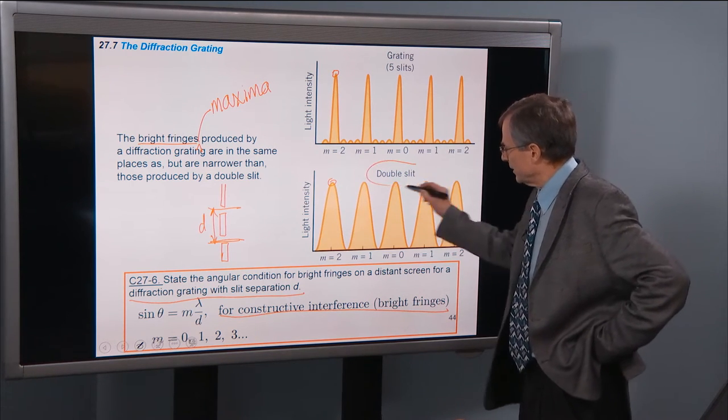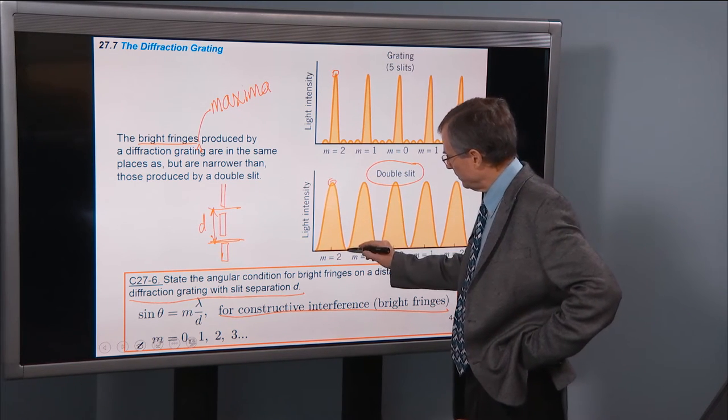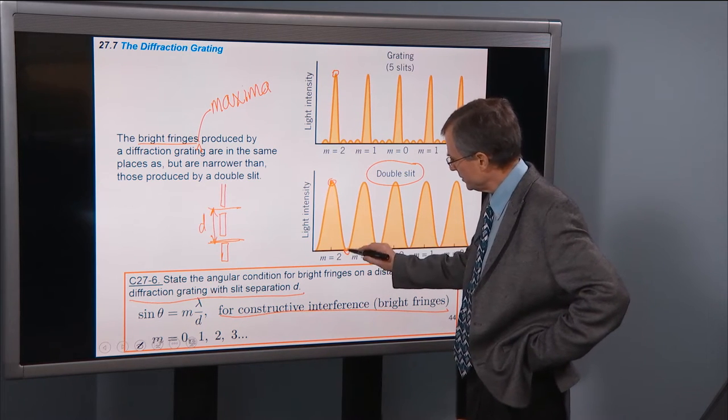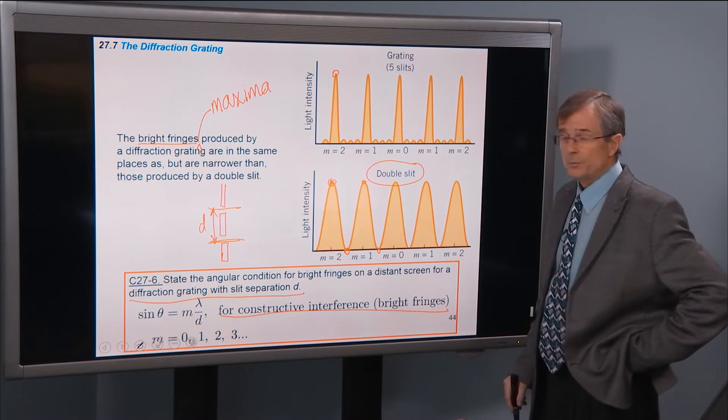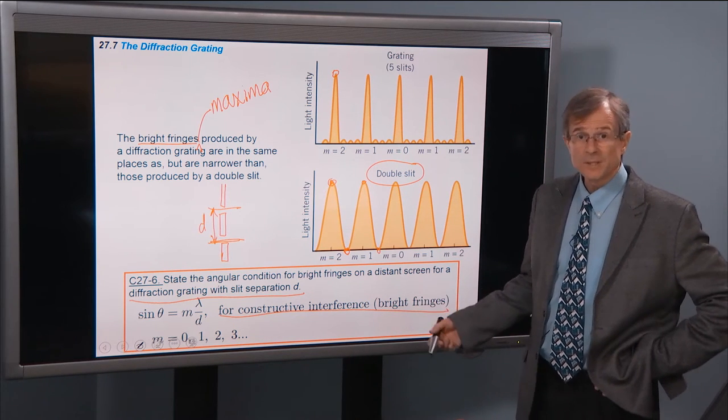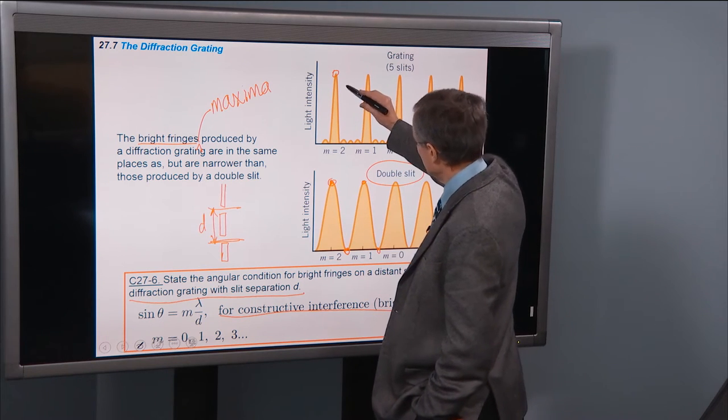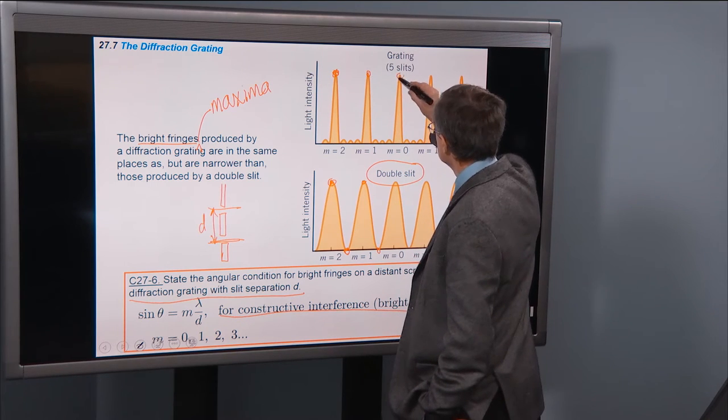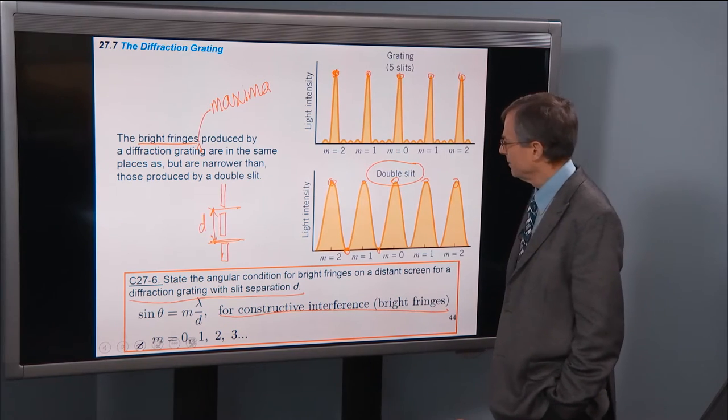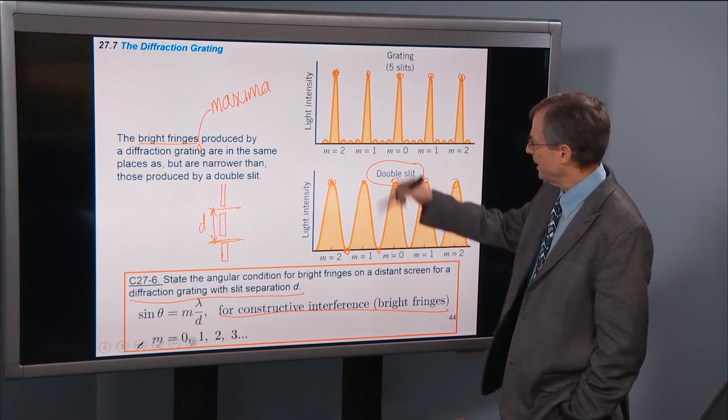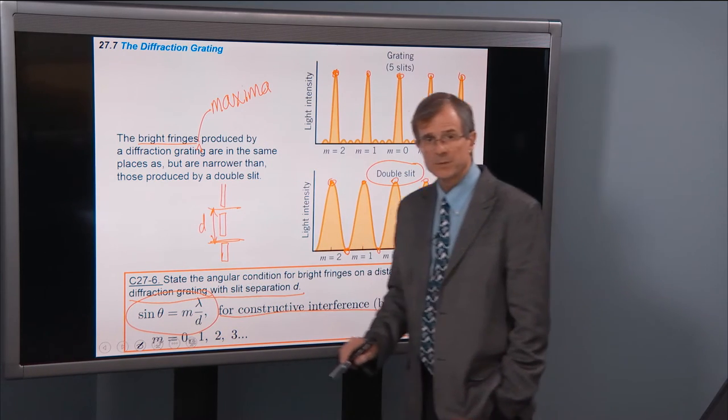This is for a double slit, two slit. We've got a maximum, we've got a minimum. So this is a bright fringe, this is a dark fringe, bright fringe, dark fringe, etc. What do we get for the diffraction grating with five slits in it? Turns out the maxima, the bright fringes, are in the same places as they were for the two slits. One, two, three, four, five of those. M equals one, m equals two, the angles are all the same. That's given by this equation. It's the same as it is for two slits.